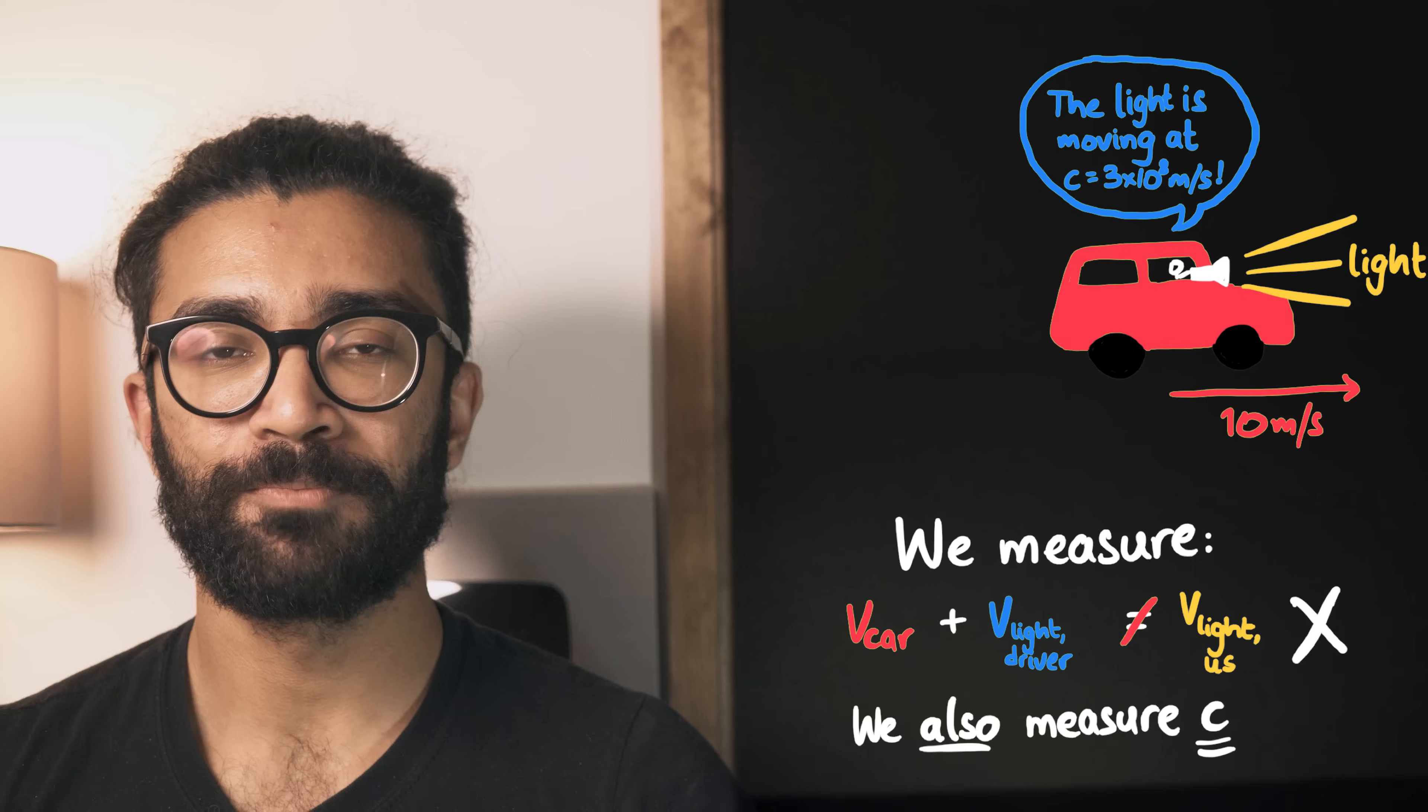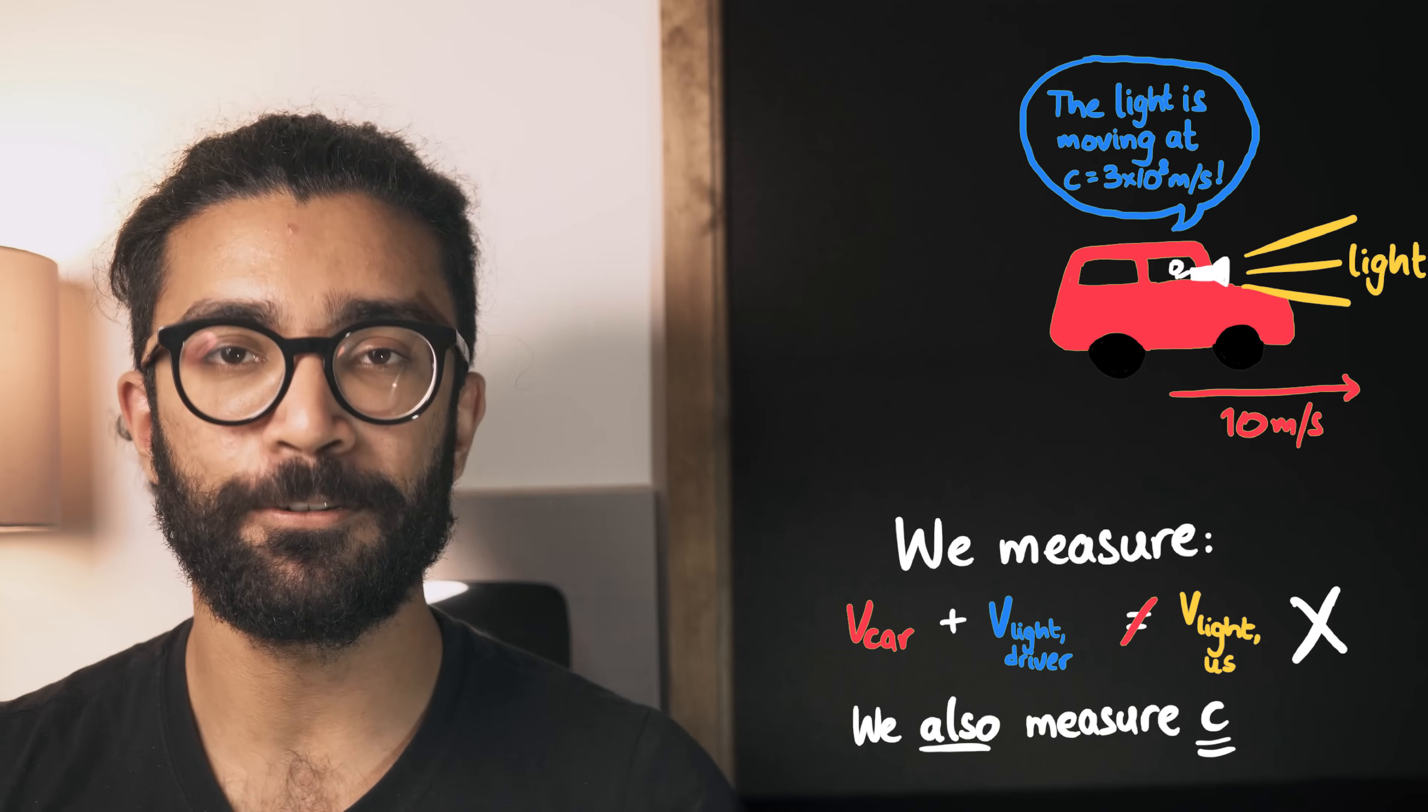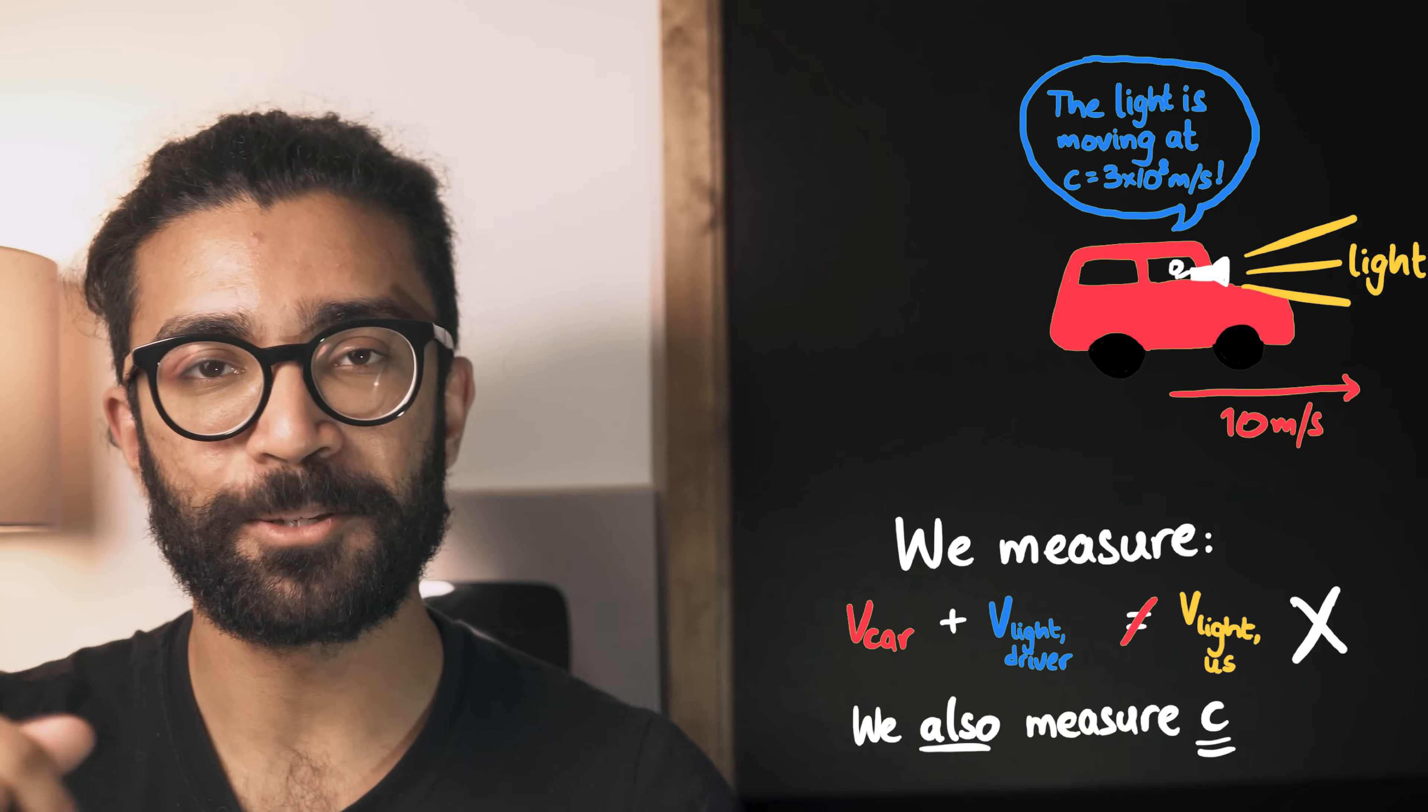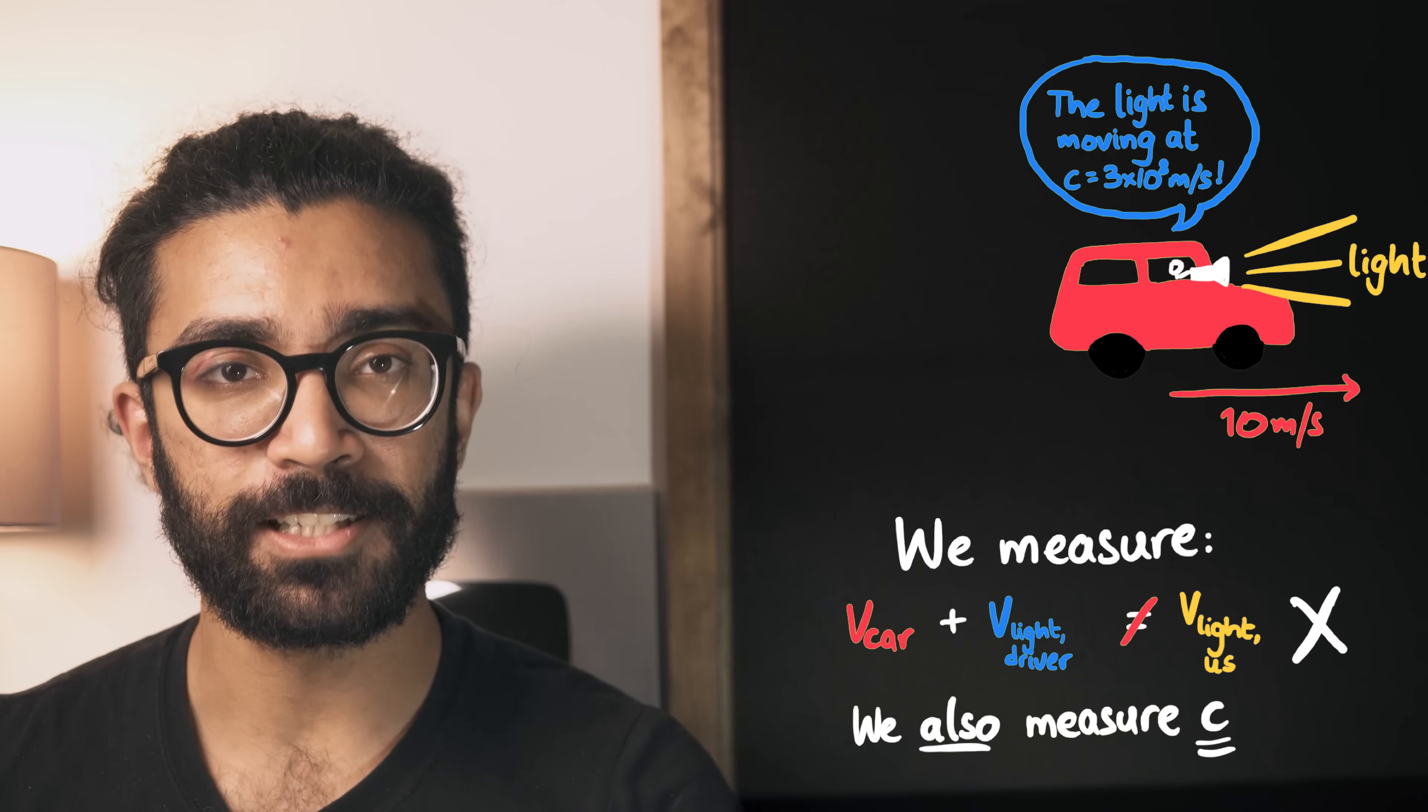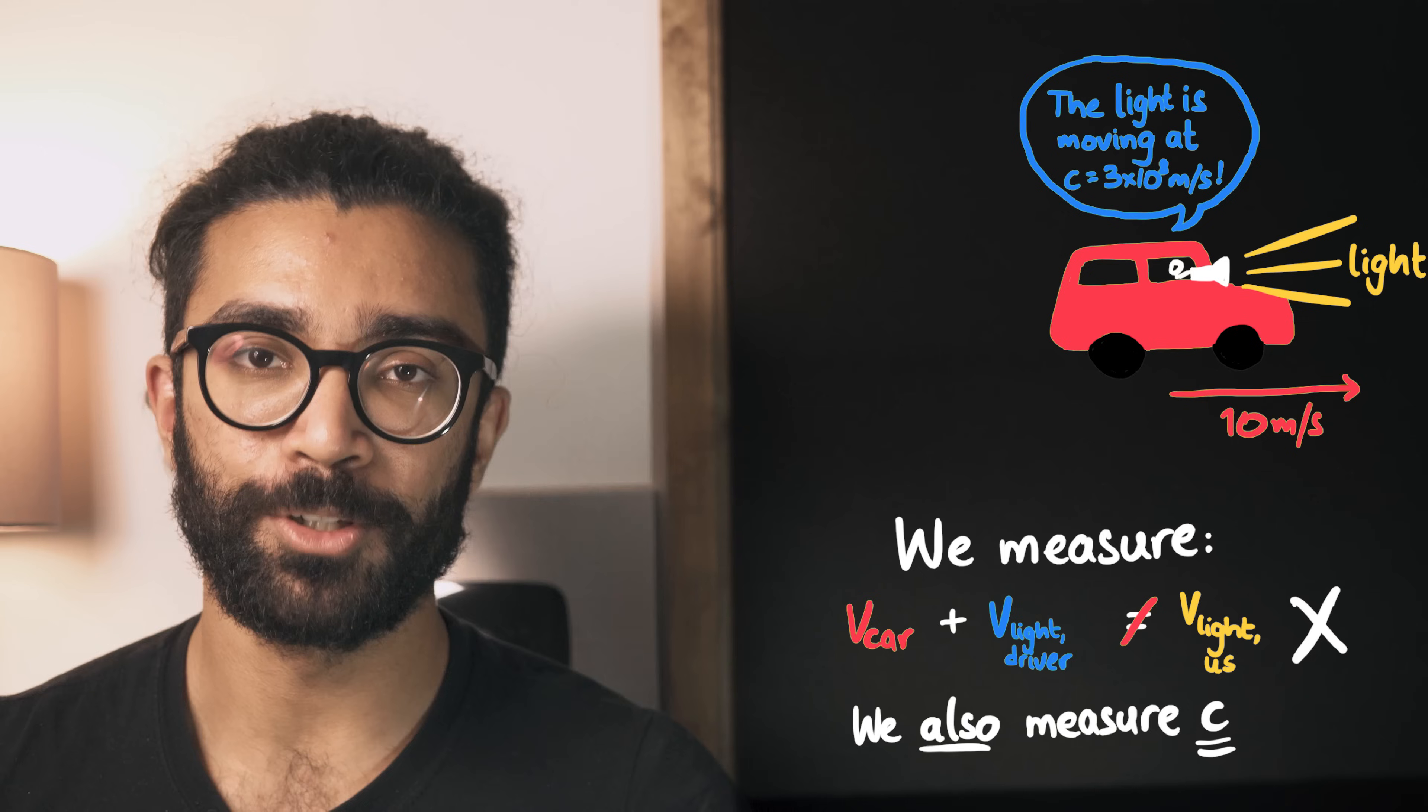So if the car were to shine a flashlight out the front, we would not measure the light from it to be moving at the speed of light plus the speed of the car. We'd just measure it as moving at the speed of light. But so would the driver of the car. In order for this to be possible, different reference frames have to perceive space and time differently. This is a really strange idea if you've never seen it before, so I'll leave some stuff in the description below if you want to find out more.